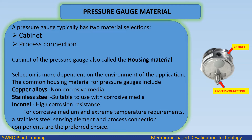Pressure gauge material: A pressure gauge typically has two material selections — cabinet and process connection. The cabinet, also called the housing material, is selected based on the environment of the application. Common housing materials include copper alloys for non-corrosive media, stainless steel for corrosive media, and Inconel for high corrosion resistance. For corrosive media and extreme temperature requirements, stainless steel sensing elements and process connection components are the preferred choice.